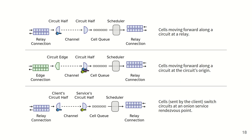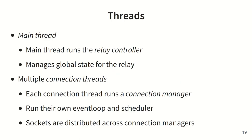We use the relay's main thread to run the relay controller, which manages the global state of the relay. Other threads are referred to as connection threads and run connection managers. Connections to the relay, along with any circuit halves which belong to those connections, are distributed among these thread-specific connection managers. Every thread runs its own event loop and connection scheduler.